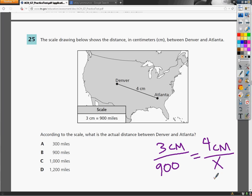So I'm going to take 900 miles and divide it by 3 centimeters. This will tell me how many miles are represented by each centimeter on the map. So I need to do 900 divided by 3 and it gives me 300 miles per centimeter.